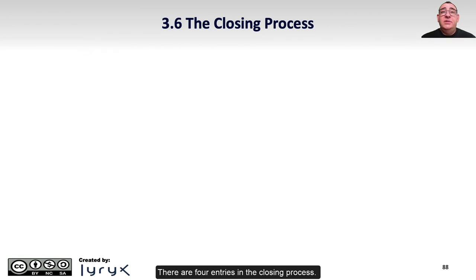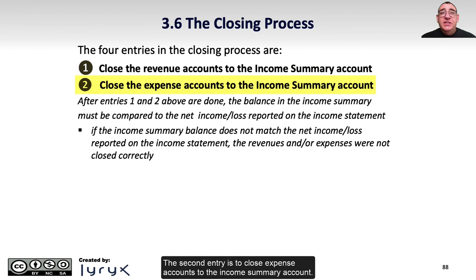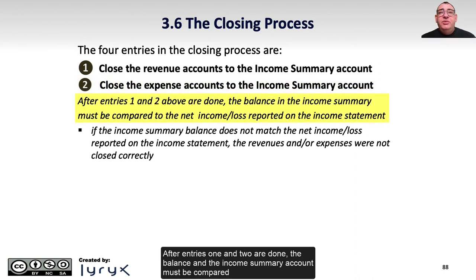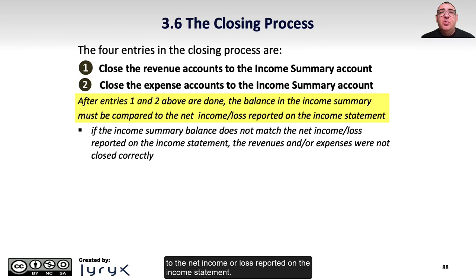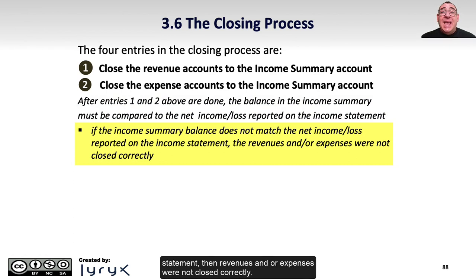There are four entries in the closing process. The first is to close the revenue accounts to what's called an income summary account. The second entry is to close expense accounts to the income summary account. After entries 1 and 2 are done, the balance in the income summary account must be compared to the net income or loss reported on the income statement. If the income summary balance doesn't match, then revenues and/or expenses were not closed correctly.